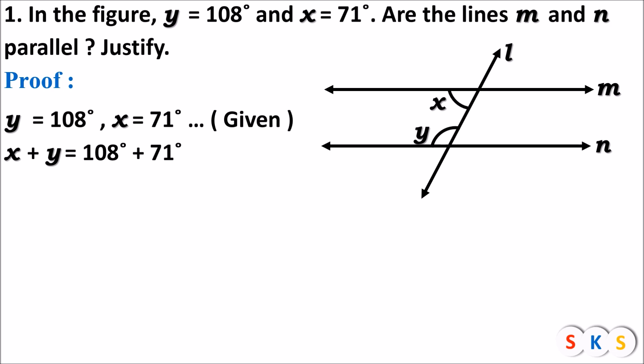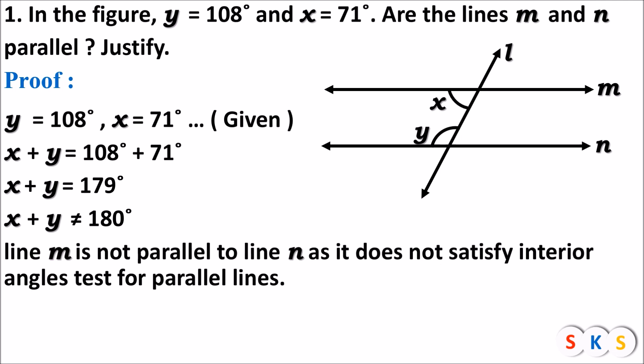Angle x plus angle y equals 108 degrees plus 71 degrees, therefore x plus y equals 179 degrees. This means x plus y is not equal to 180 degrees, so the sum of these two interior angles is not supplementary. Hence, line m is not parallel to line n, as it does not satisfy the interior angle test for parallel lines.